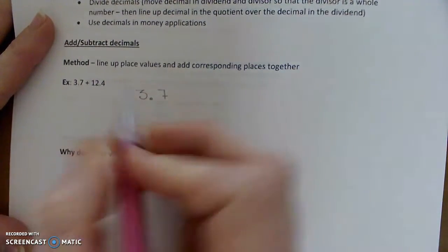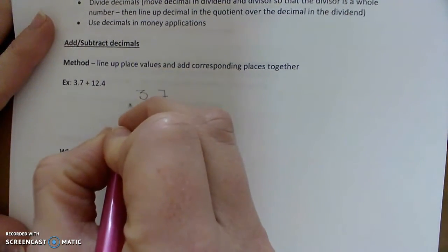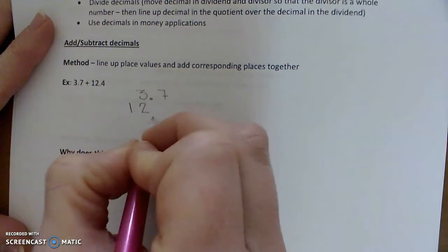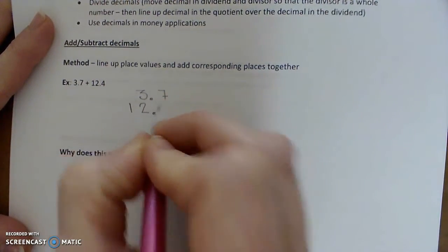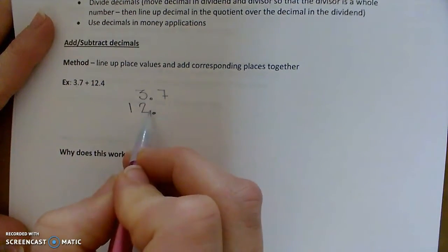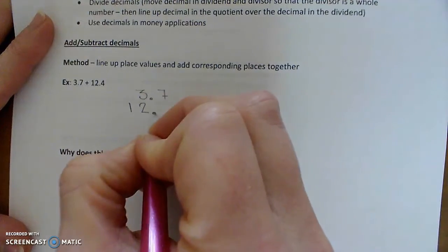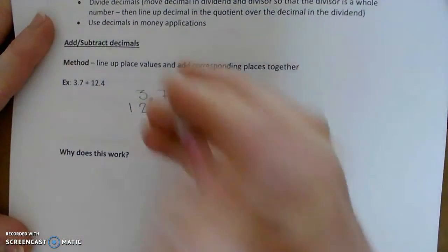Line up the whole number parts together, so tens place, ones place, so the ones places are lined up together. And the decimal point is lined up, if you line up the decimal point that automatically lines up all the places for you.